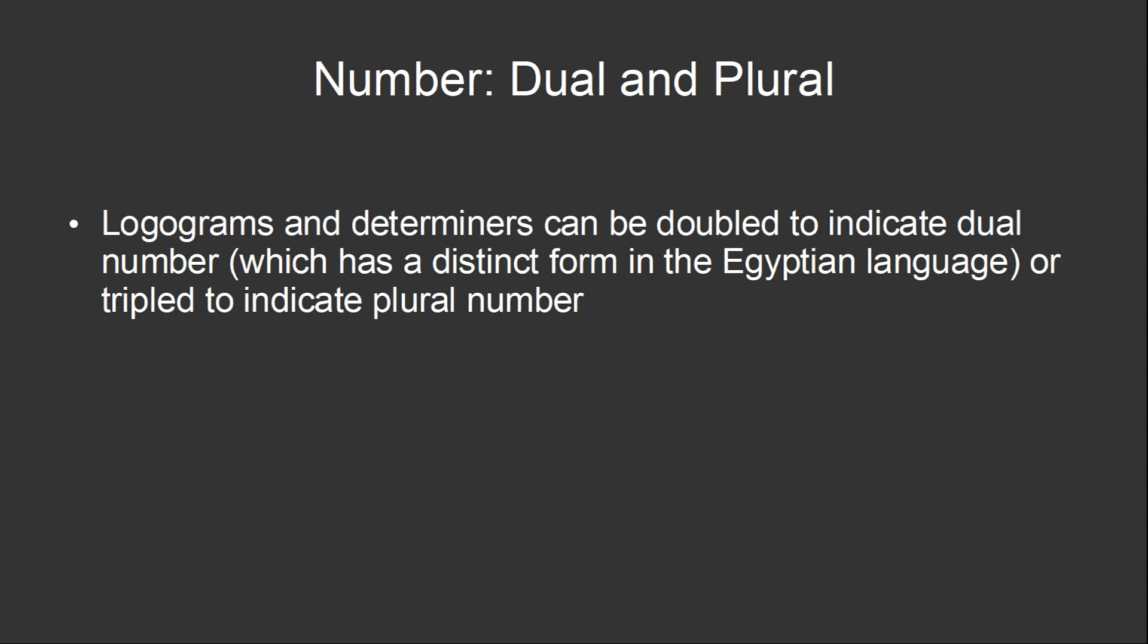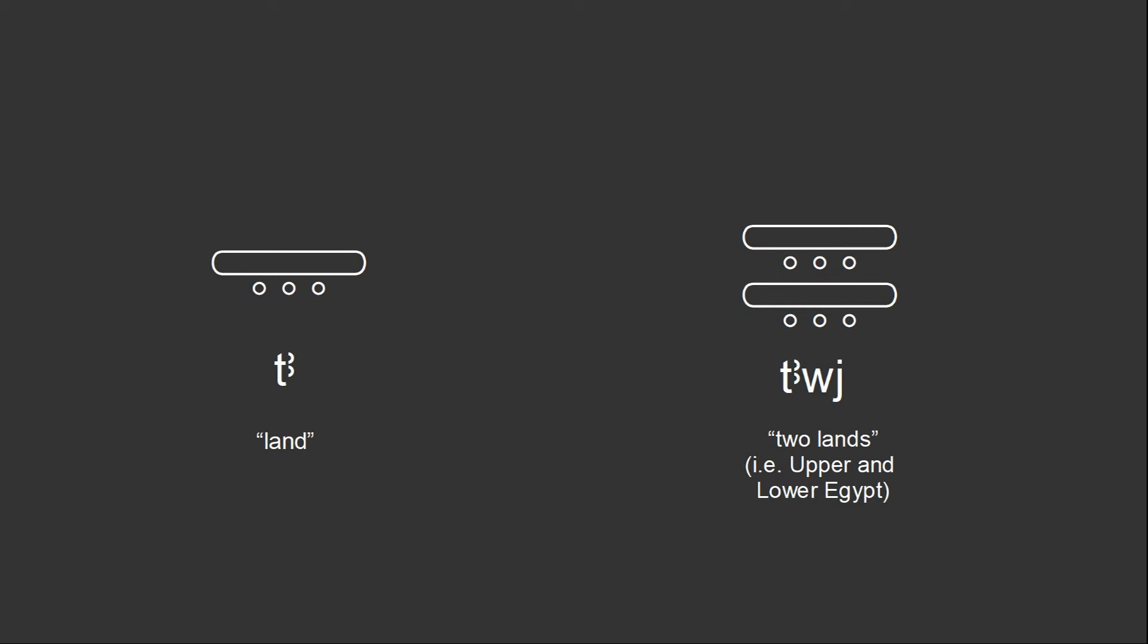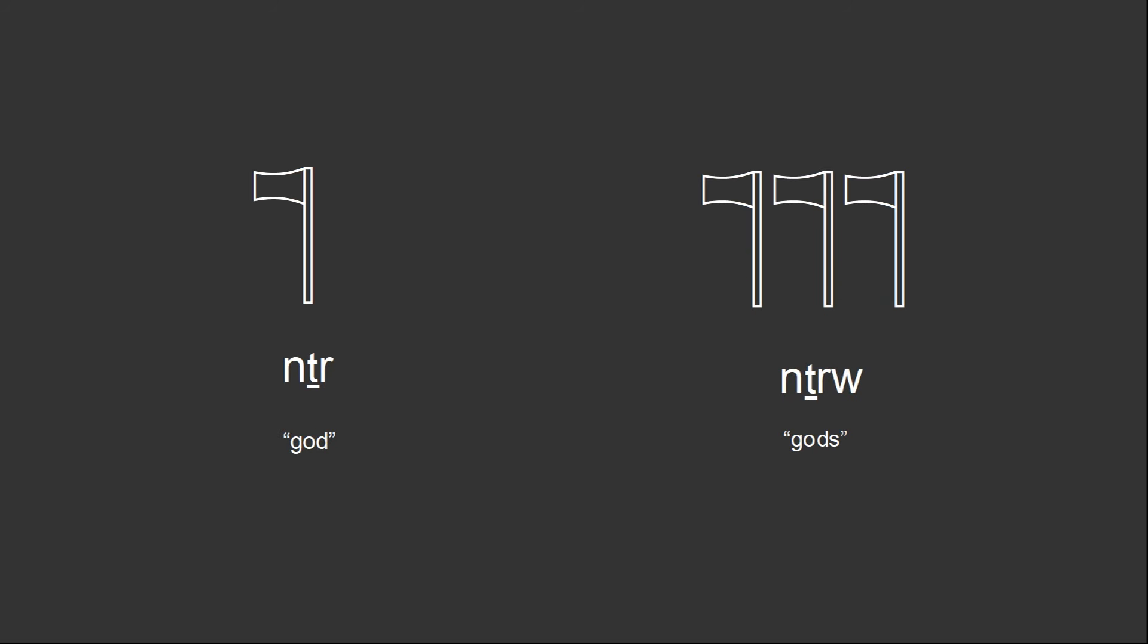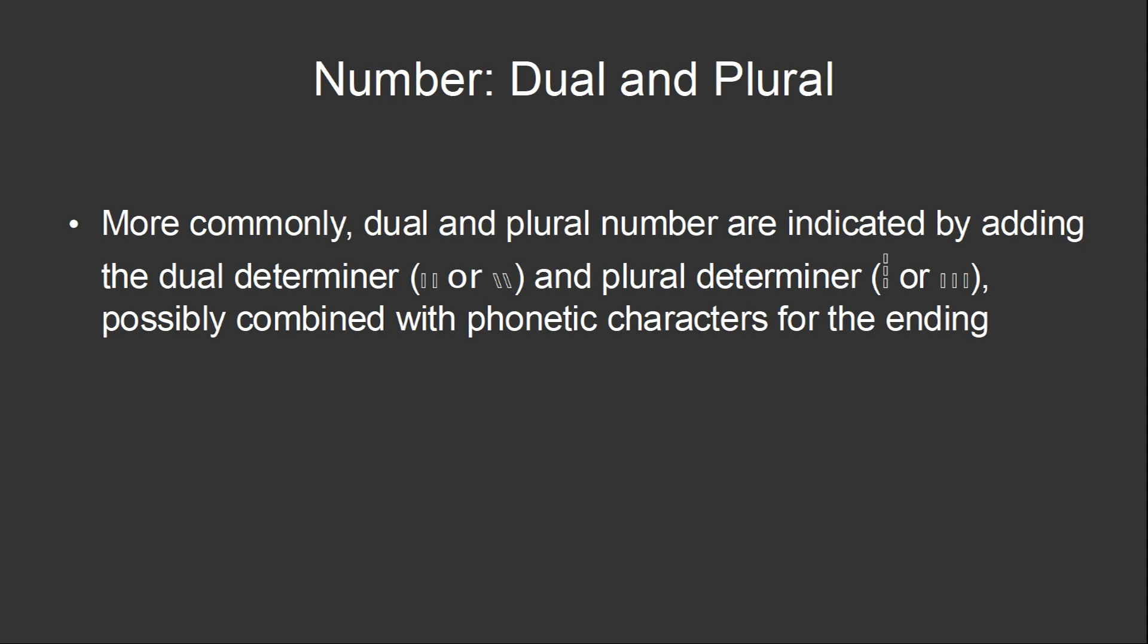And finally, there are just a few other quirks of the writing system that I'd like to mention. In nouns, characters can be doubled to indicate the dual number, which has a special form in the Egyptian language, or tripled to indicate the plural number. Ta means land. When the logogram is doubled, it becomes taui, two lands, i.e. Egypt, which consists of upper and lower Egypt. This logogram is necher, meaning god, which can be tripled to become necheru, or gods. Doubling and tripling of characters is mainly found in older writing, with newer writing generally preferring to use the dual or plural determiners instead.